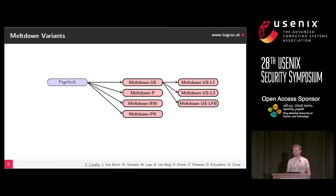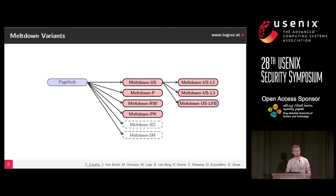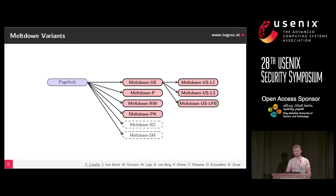Meltdown-PK uses Intel's memory protection keys, which exhibit the same problem: the permission check is done too late, we get the data and can recover it. We were able to show that these work, but there are also some where we simply failed to show any Meltdown-type effects — like Meltdown-XD with non-executable or Meltdown-SM with SMAP. We saw no transient execution following those.